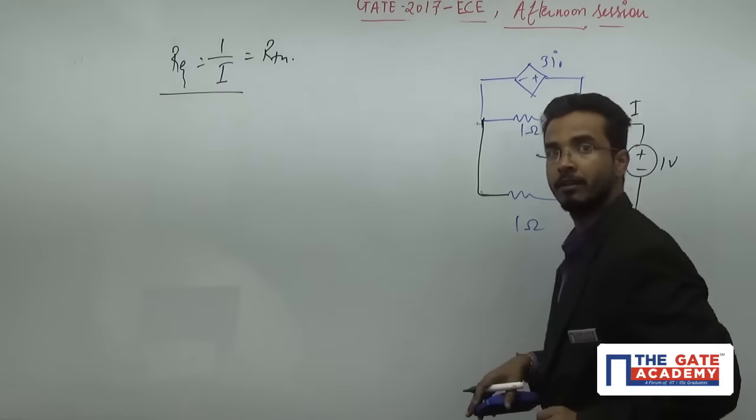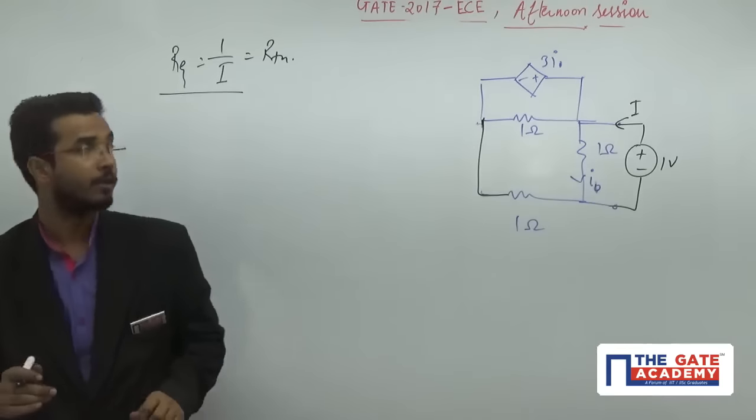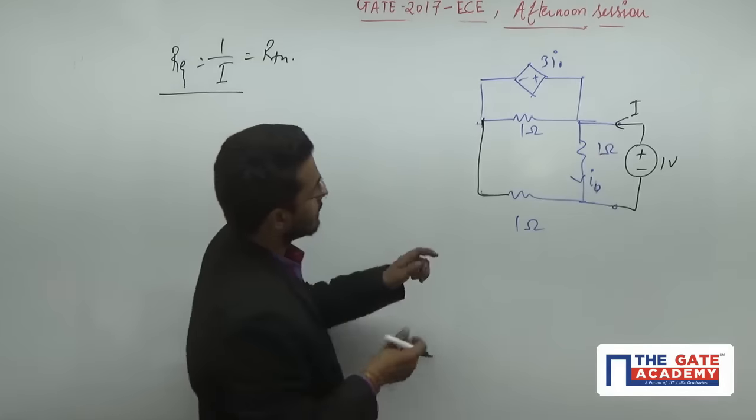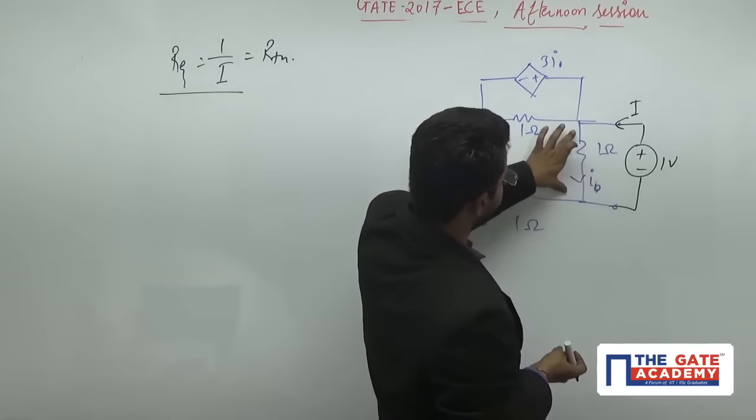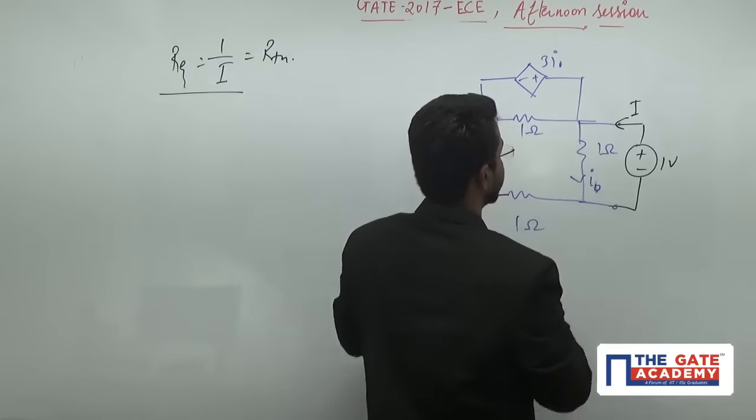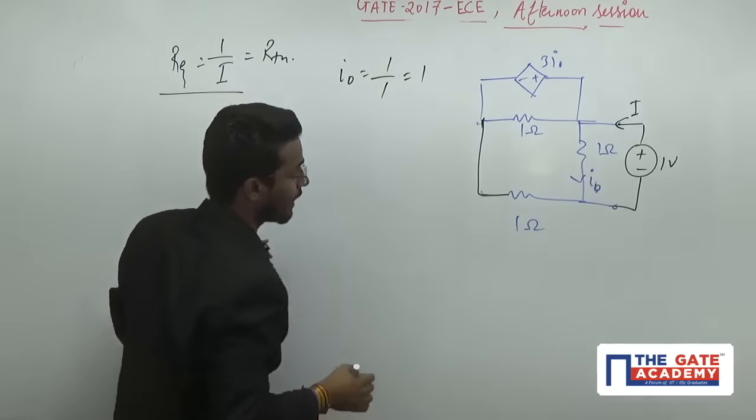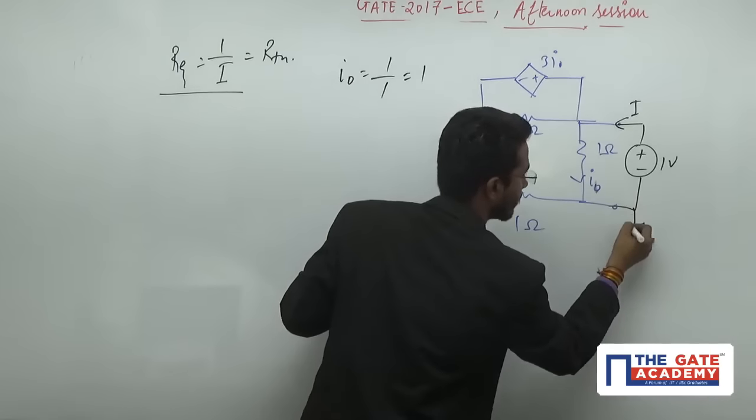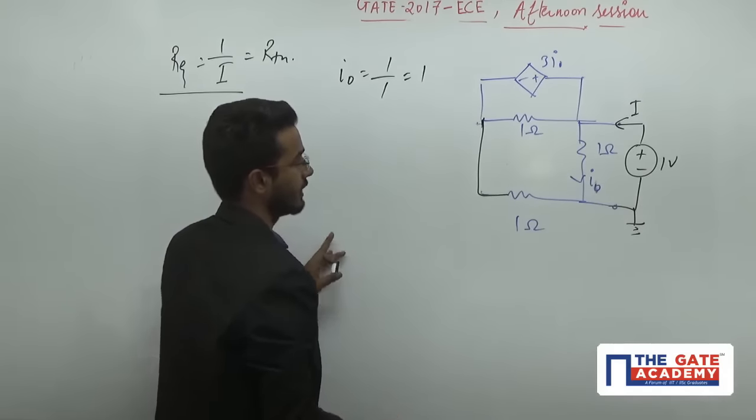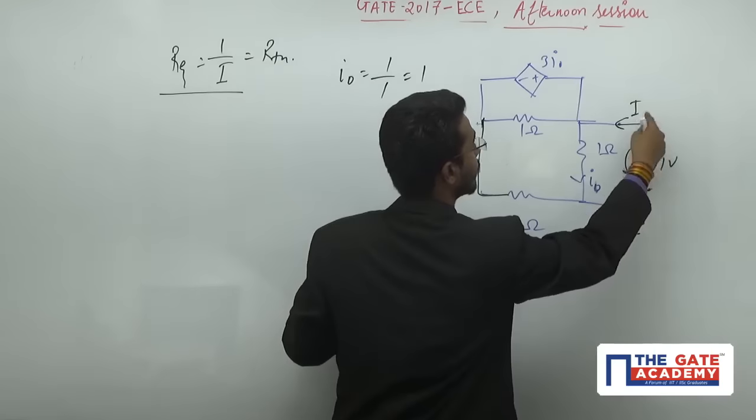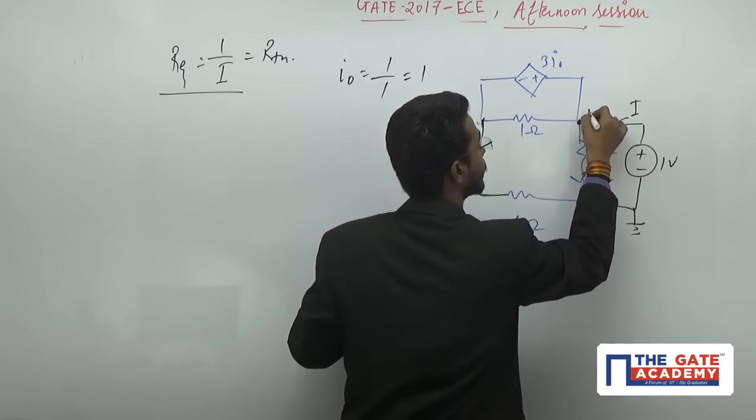Because I have applied one volt battery, I will calculate what is the current from here. This is my node. This will be one volt. Here I naught is one divided by one, which equals one. Here I am assuming the ground, which means here there is a rise of one volt. At this node the voltage is one volt.